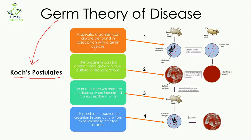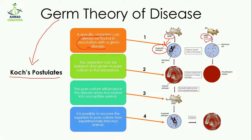The first postulate states: a specific organism can always be found in association with a given disease. For example, anthrax is caused by a specific bacteria, so if a person is suffering from anthrax, that particular bacteria will be found in that person. This is a diseased mouse and this is a healthy mouse — they observed suspected pathogens in the diseased mouse, but there were no pathogens in the healthy mouse.